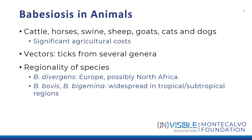Babesia infect a wide range of animals including cattle, horses, swine, sheep, goats, cats, and dogs. Agricultural costs from these infections are significant. The tick vectors involved in disease transmission vary between Babesia species and geographic differences are evident. Babesia divergens is found in Europe and possibly North Africa, while Babesia bovis and Babesia bigemina are widespread in tropical and subtropical regions.